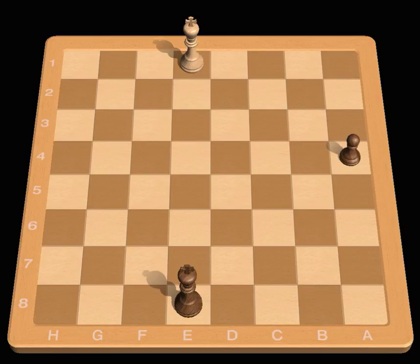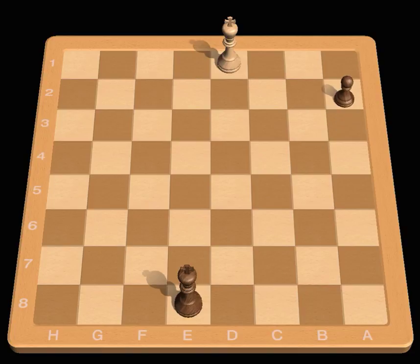Because a promotion, an opponent's pawn that is unopposed is a dangerous threat. Here, the white king is too far away to capture the black pawn. Black can now win the game with ease.